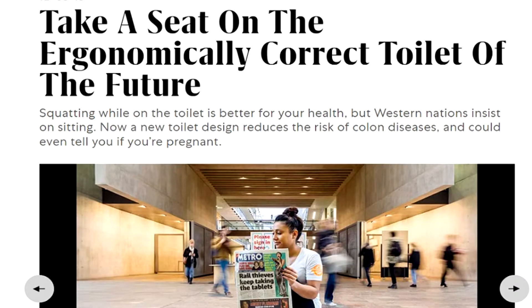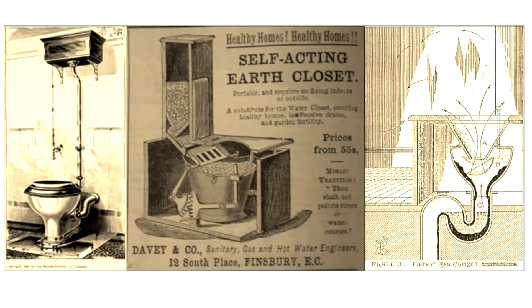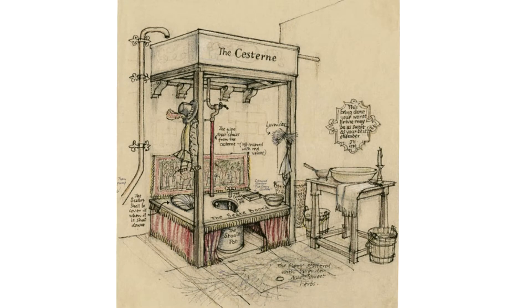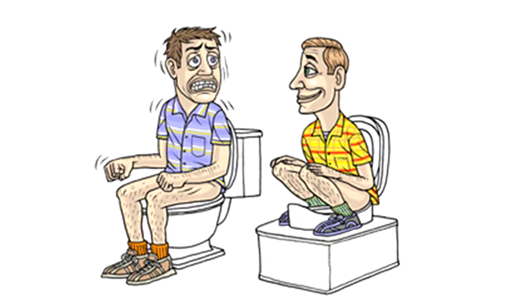Experts say that the invention of the toilet about 180 years ago had an ergonomic mistake. The carpenter and the plumber that invented the water closet, which is the first version of the modern toilet, didn't take into consideration our natural posture to defecate. The toilet made people sit during bowel movements instead of squatting as we used to. This mistake opens up the door to many intestinal diseases.